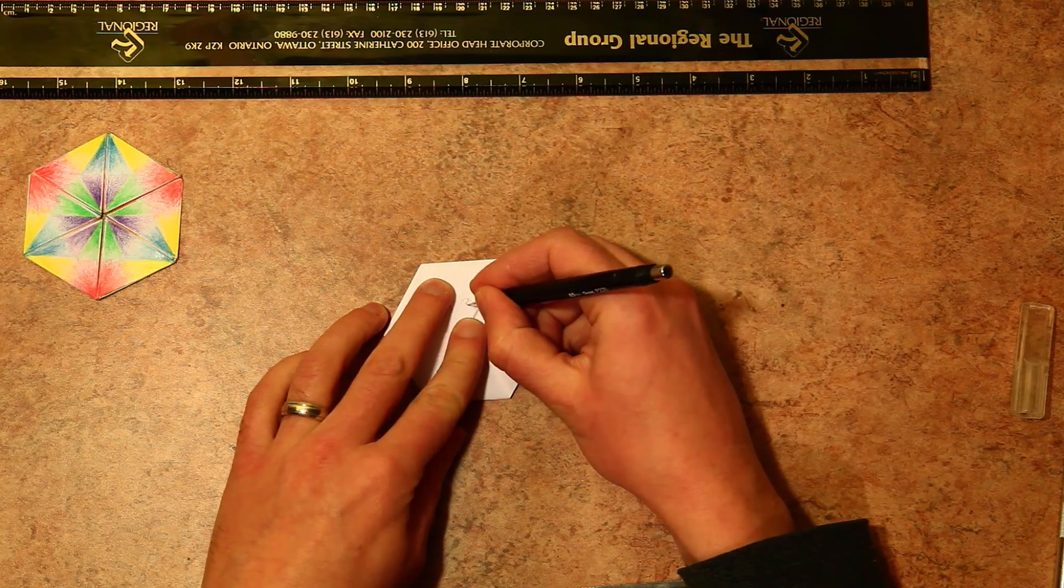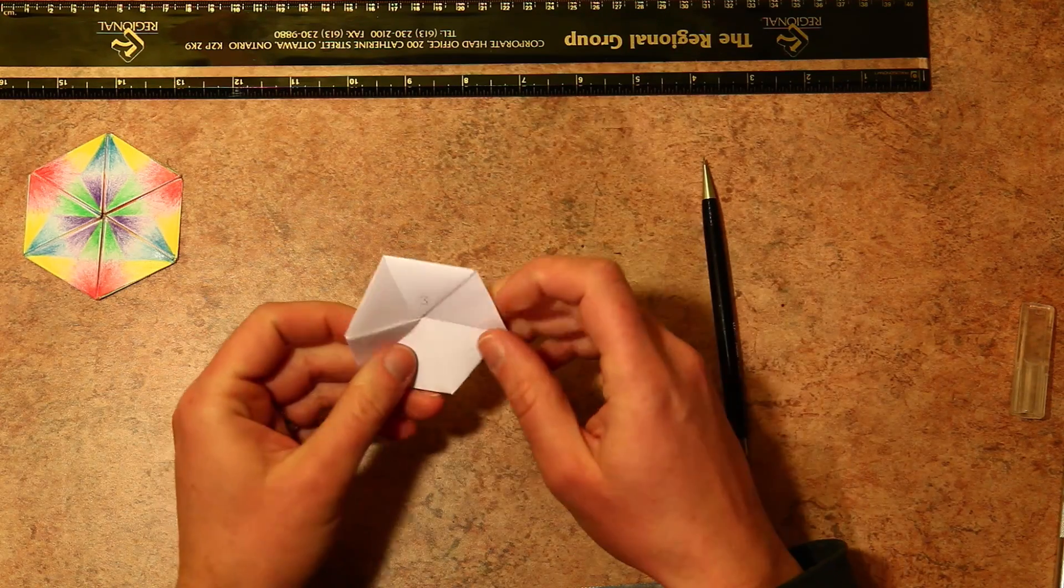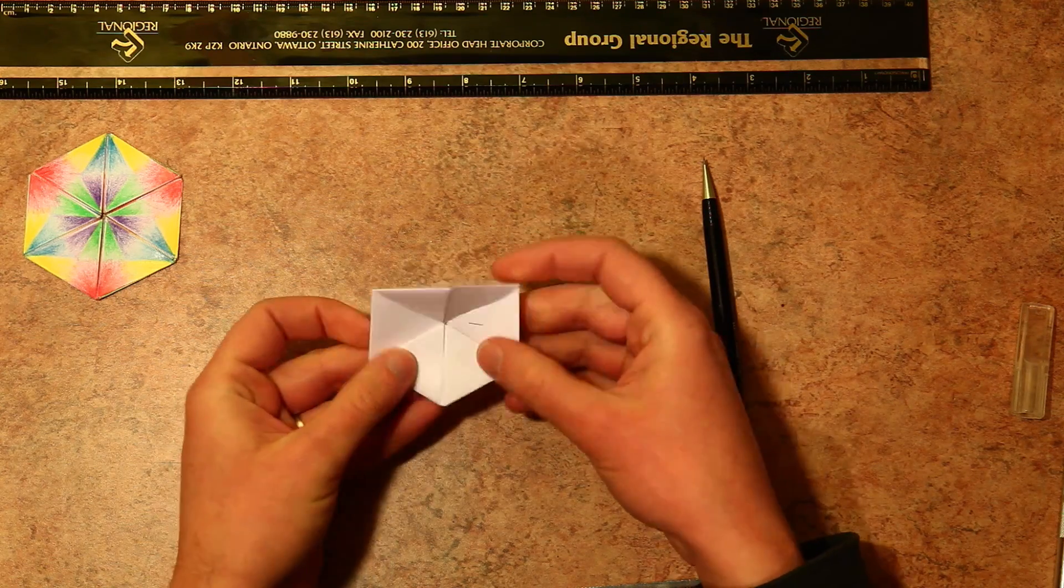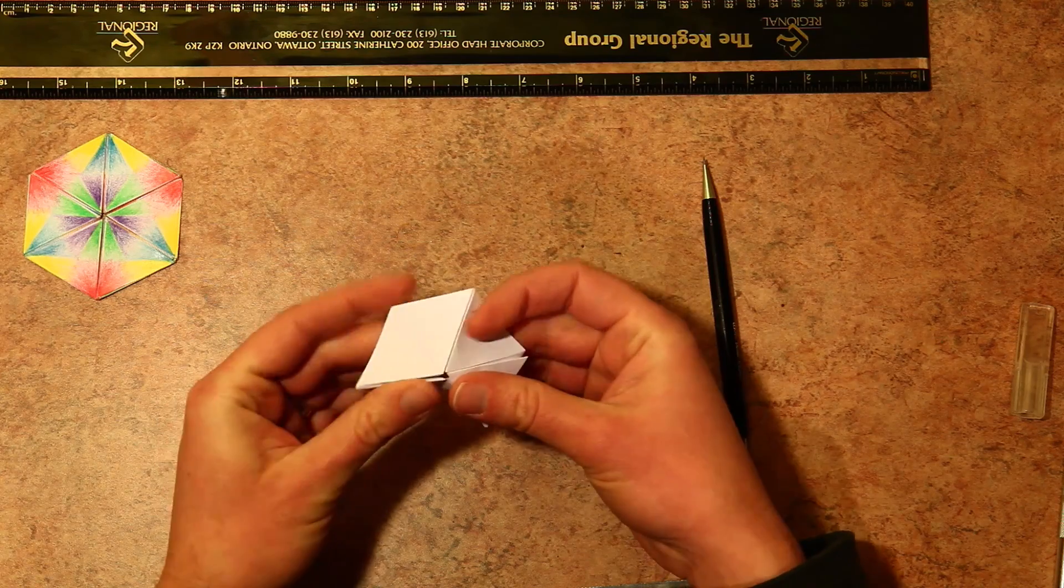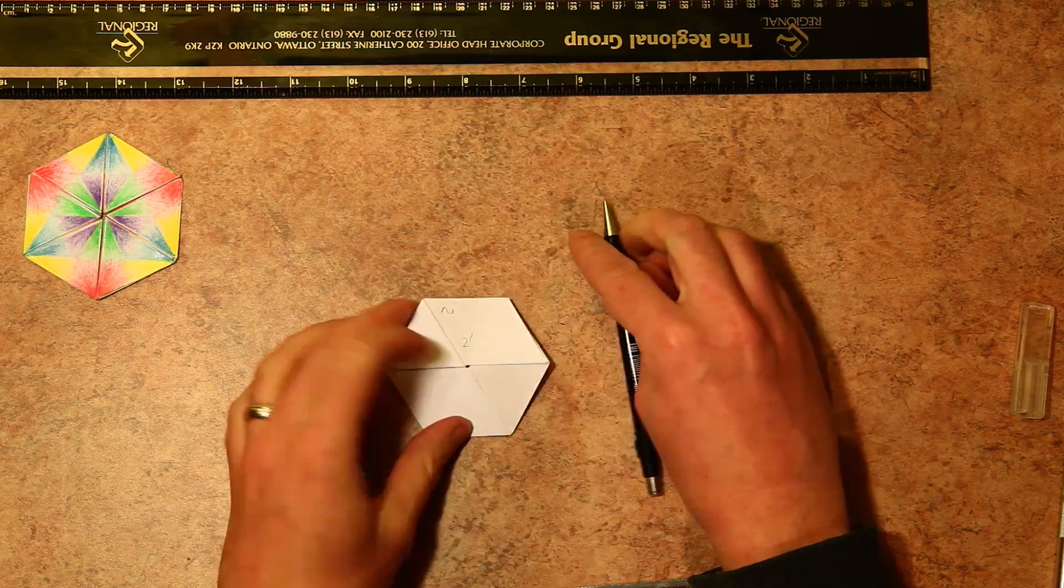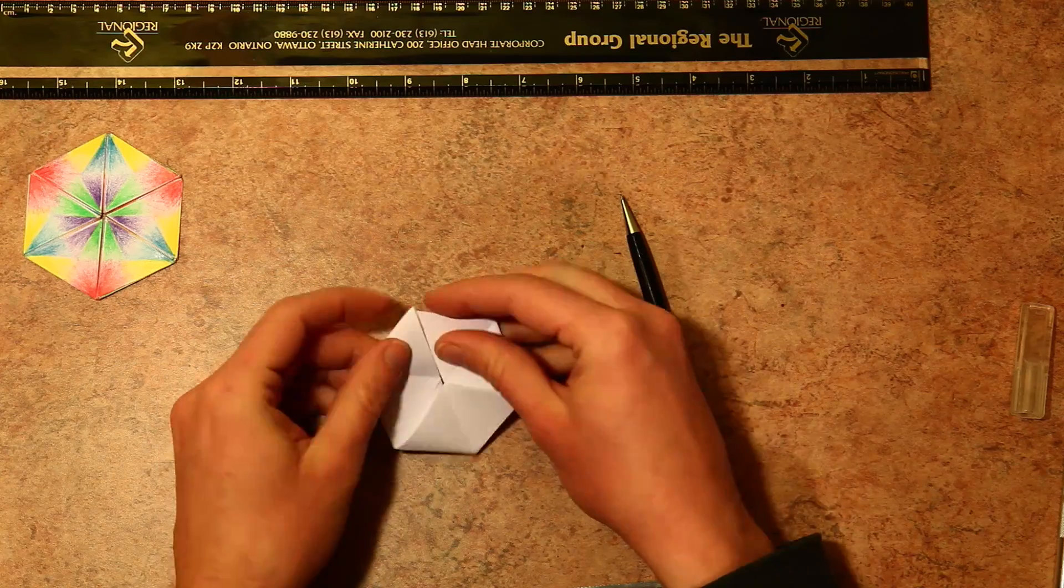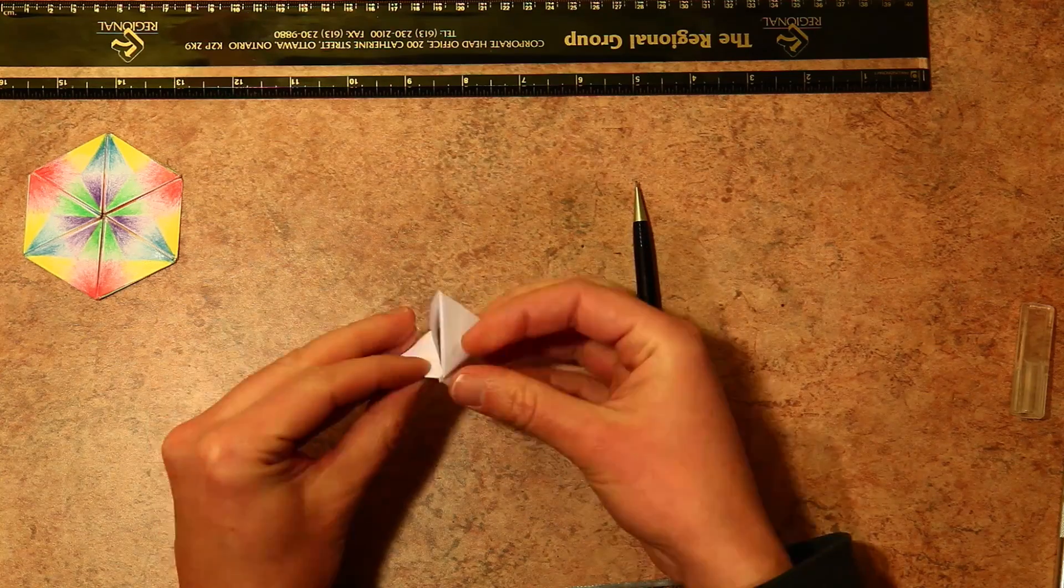The numbering scheme I like to use is a little number towards the center of the hexaflexagon. Now some of these sides will have two ways of getting to them, so I denote the other way with a little prime symbol. So we've got side one and side one primed. This will be useful for the dodecahexaflexagon.